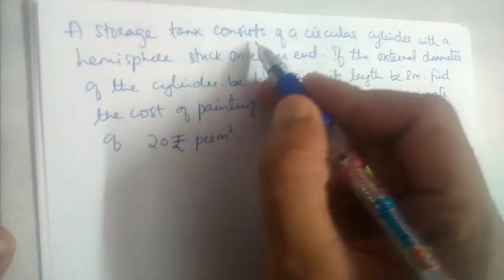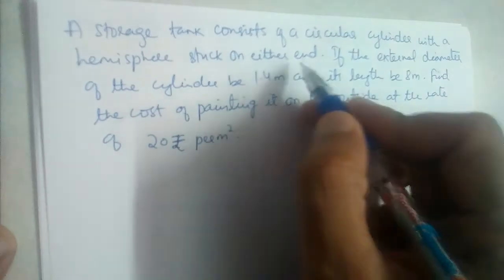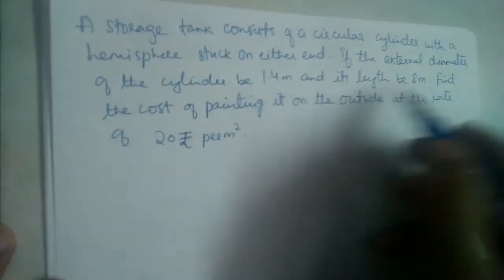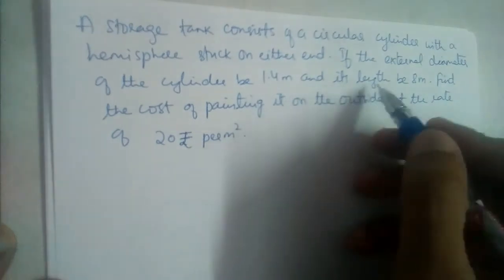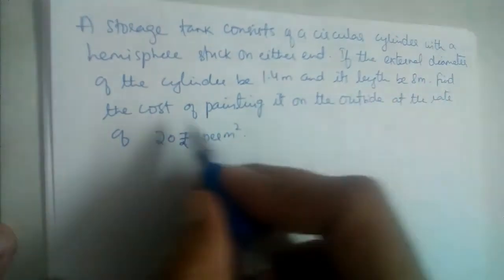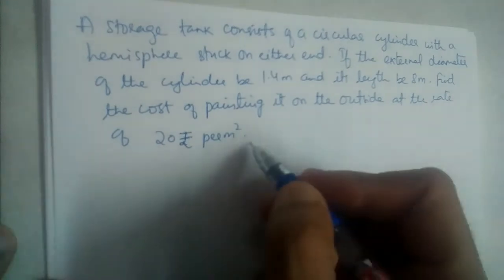A storage tank consists of a circular cylinder with a hemisphere stuck on either end. If the external diameter of the cylinder is 1.4 meters and its length is 8 meters, find the cost of painting it on the outside at the rate of 20 rupees per meter square.